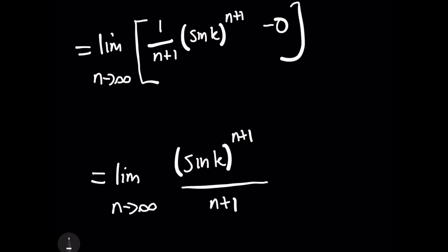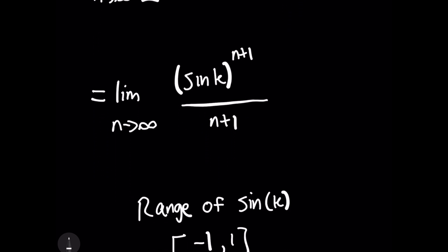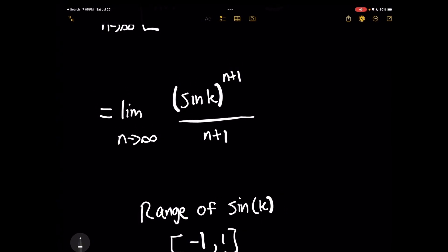Yes, sine of k is cyclical and it keeps resulting in values from negative 1 to 1 no matter how large n is. But with the squeeze limit theorem, what we can do is rewrite this expression as an inequality where the limit we're trying to solve is sandwiched or squeezed between something smaller and something greater.